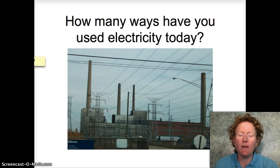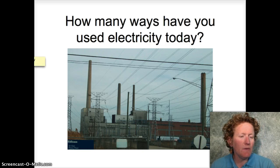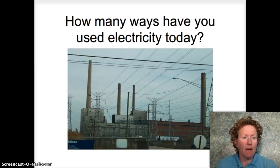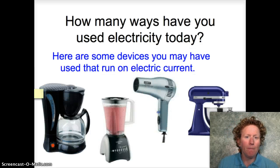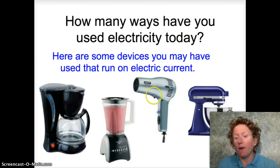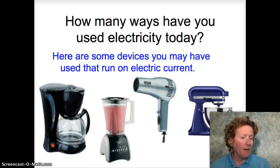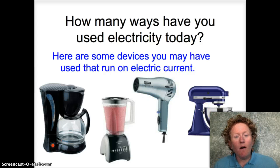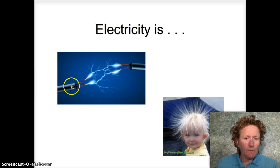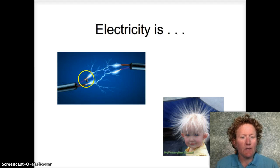Electricity is something you probably use every day, and somewhere in your neighborhood there's a power station. You may have used a coffee maker, blender, hair dryer, or a mixer. These devices all run on electric current, so electric current is part of our everyday life. Electricity is just electrons all moving in the same direction.